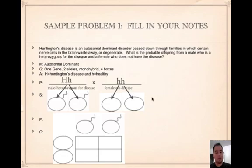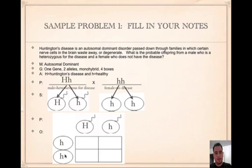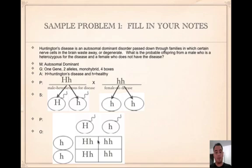We find the sex cells — it's one gene, just the letter H — so we separate. Sperm cells: big H and little h. Egg cells: little h and little h. Set up the Punnett square with sperm on top and eggs on the side, then fertilize down and across. The capital goes in front. Two out of four offspring have big H, which means Huntington's disease — that's 50%. The other two are little h little h — healthy. So it's 50-50.